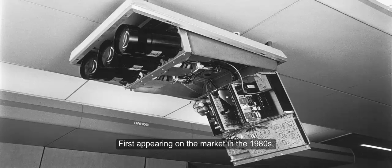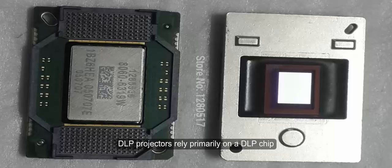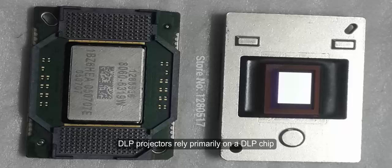First appearing on the market in the 1980s, DLP projectors rely primarily on a DLP chip called a Digital Micro-Mirror Device comprised of up to 2 million tiny mirrors.